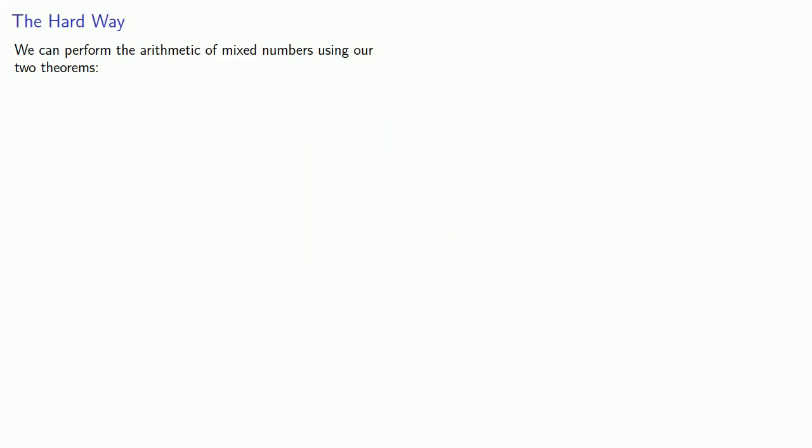What about the multiplication of mixed numbers? We can perform the arithmetic of mixed numbers using our two theorems. Any quotient gives us a mixed number, and any mixed number can be converted into an improper fraction.